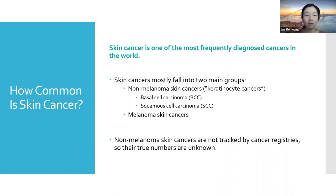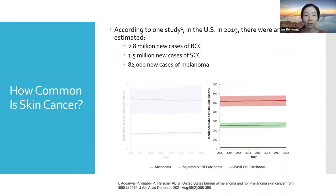These are the two main groups we hear about when talking about skin cancer. Interestingly, in many cancer registries, non-melanoma skin cancers such as BCC and SCC are not actually tracked because they are so common and people often do very well. According to one study in the United States in 2019, there were an estimated 2.8 million new cases of basal cell cancer, 1.5 million new cases of squamous cell cancer, and 82,000 new cases of melanoma. Basal cell cancer is the most common, squamous cell is second, and melanoma is at the bottom.